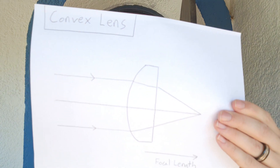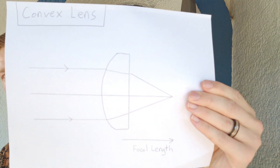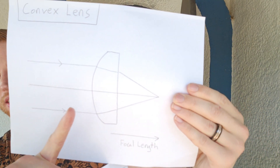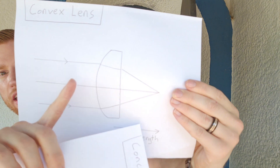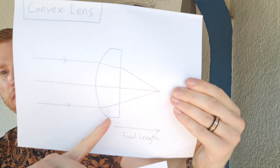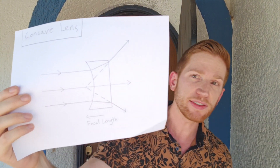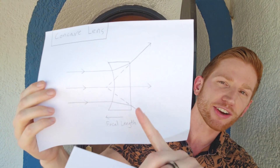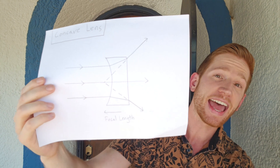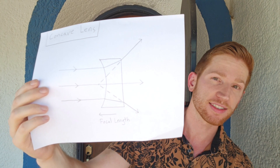Concave and convex describe the shape of the lens. A convex lens bulges outwards — the center is thicker than the edges — while a concave lens is the opposite. The center is thinner than the edges of the lens.